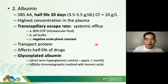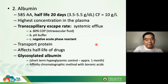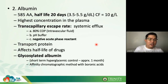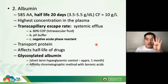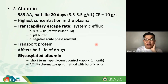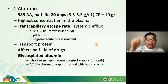Glycosylated albumin, also known as fructosamine, is a short-term test for hyperglycemic control — usually two to three weeks or approximately one month. It is measured using an affinity chromatographic method with boronic acid.